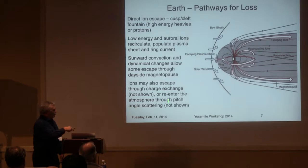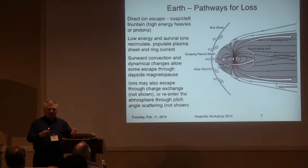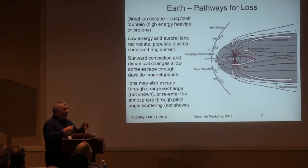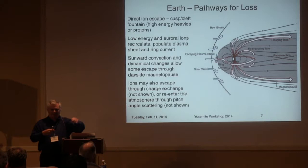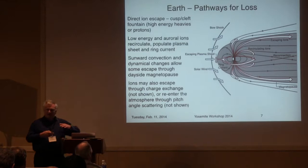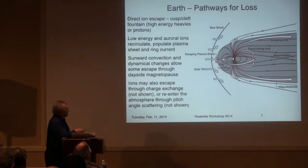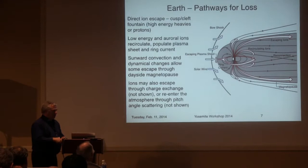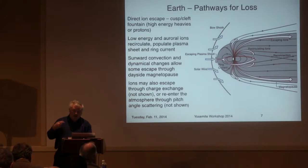The ions may also escape through charge exchange, making energetic neutrals — these are what you visualize in IMAGE-type observations. Some of those neutrals go back into the atmosphere, but the rest escape: they have enough energy as neutrals to not be held by gravity. The only other pathway back is pitch angle scattering of ions back into the ionosphere. So there are many ways of both trapping and recirculating, but also having atmospheric escape at the Earth.